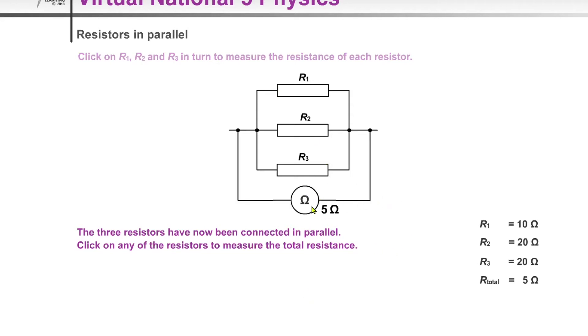So the total resistance here is found using the relationship 1/Rt = 1/R1 + 1/R2 + 1/R3, where we stop at 1/R3 because we've got three resistors in there.